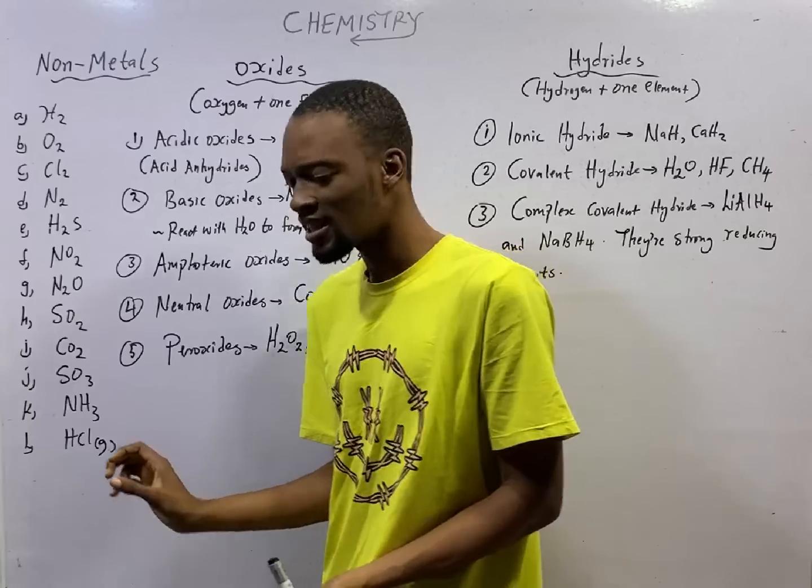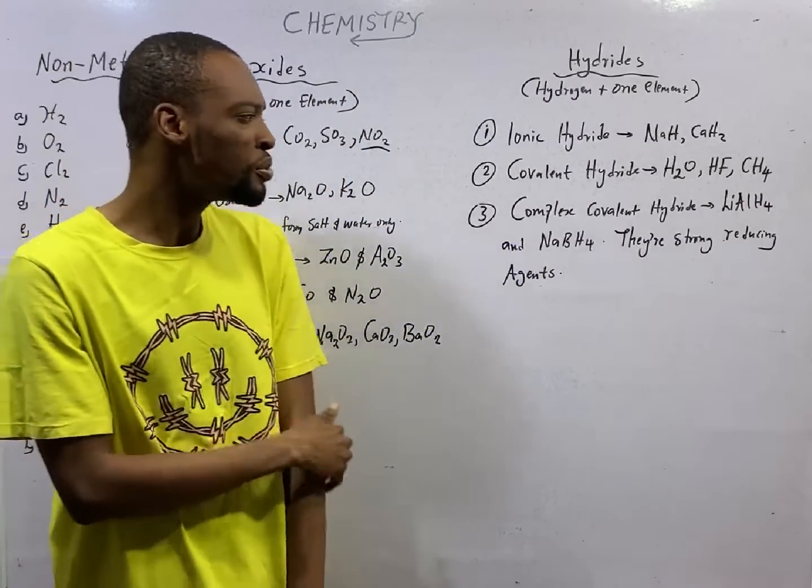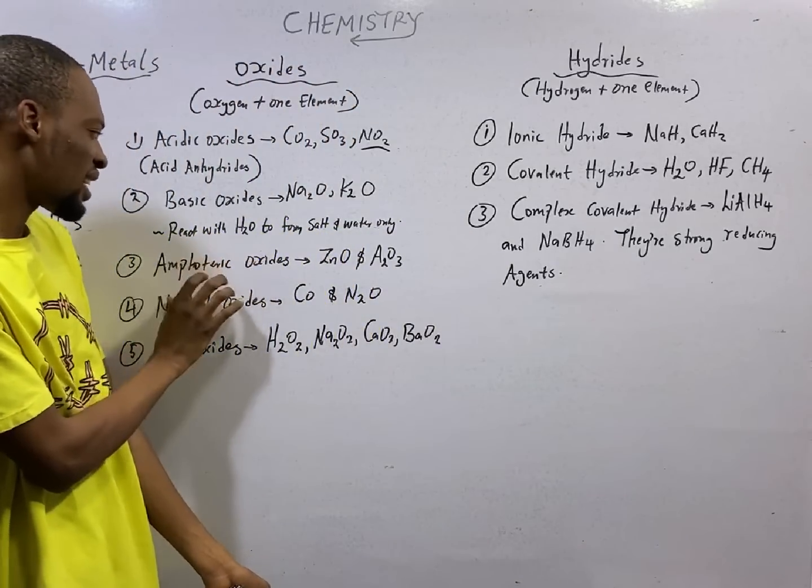And the basic oxides that are soluble in water are referred to as alkalis. Alkalis are soluble bases. And we have amphoteric oxides.